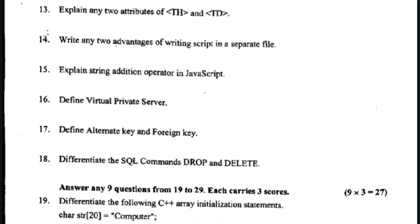Next question: define alternate key and foreign key. An alternate key is a candidate key that is not chosen as the primary key. A foreign key is a key in a table that refers to the primary key in another table.